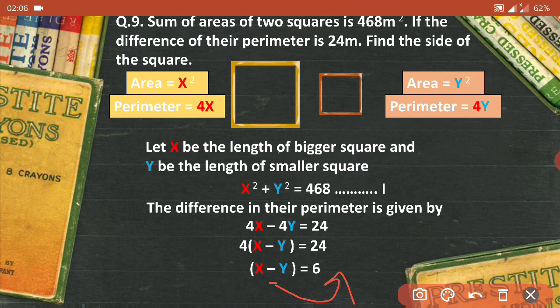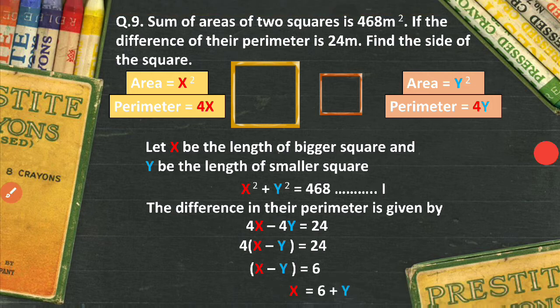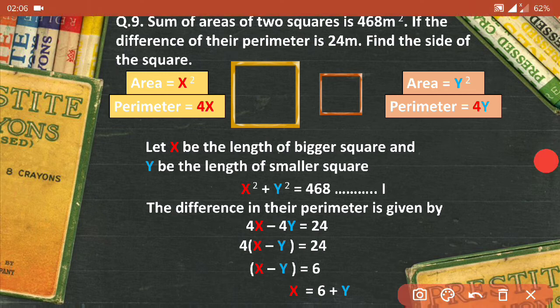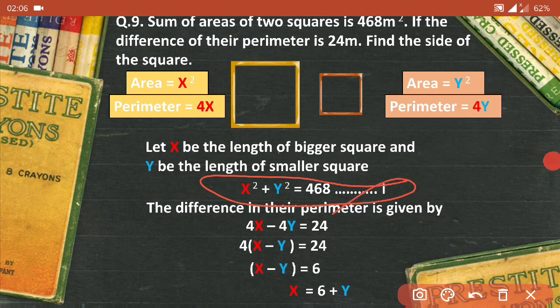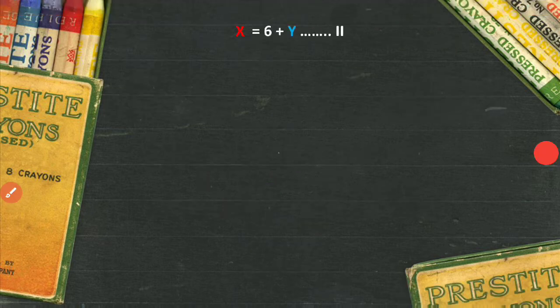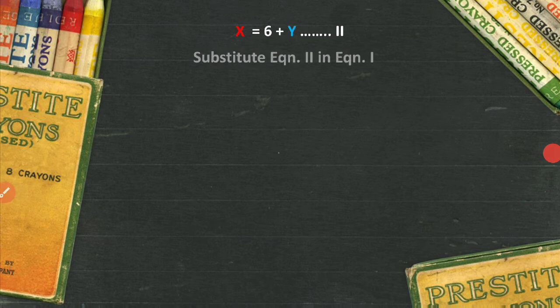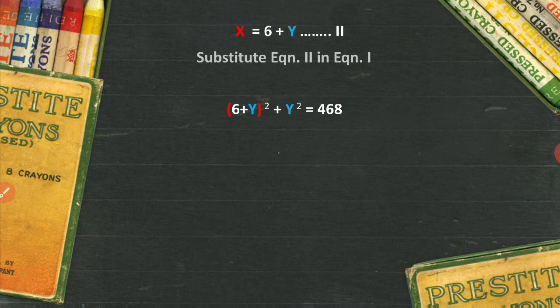Now here, instead of this equation which has x square, I can put instead of x, I can substitute the value as 6 plus y the whole square. So this would become substituting equation 2 in 1. So instead of the value of x, I have straight away taken 6 plus y the whole square. Now this is just like...